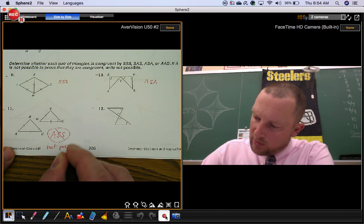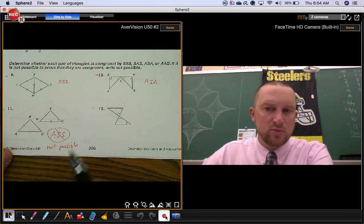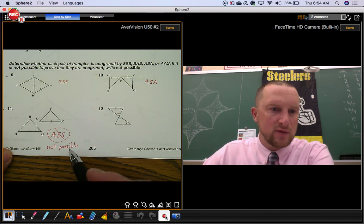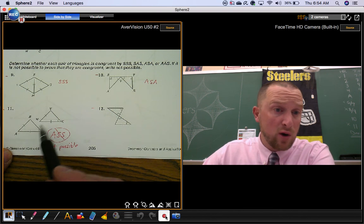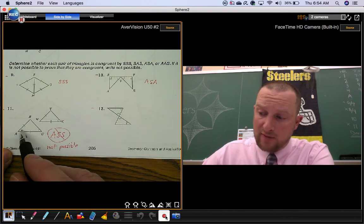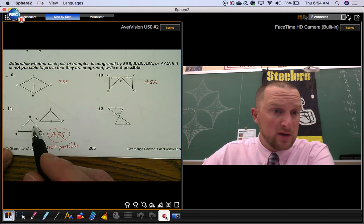That doesn't mean they're not congruent triangles. It just doesn't prove that they're congruent triangles. So you have to write not possible. They still could be congruent. Because if these triangles were congruent, these marks would be here. You would just have more information. You would know that more pairs of parts are congruent too.